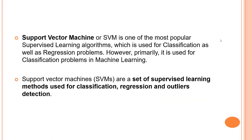The goal of the SVM algorithm is to create the best line or decision boundary that can segregate an n-dimensional space into different classes. This will help us easily place a new data point in the correct category in the future — that is, it will help us predict the probable location for a new data point.